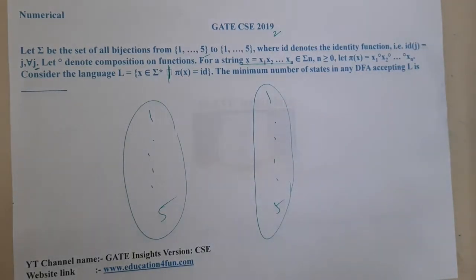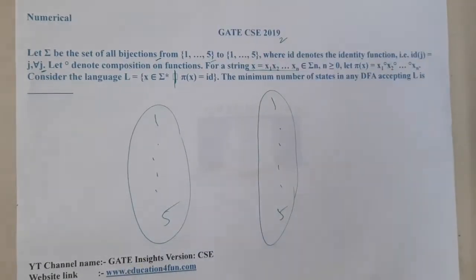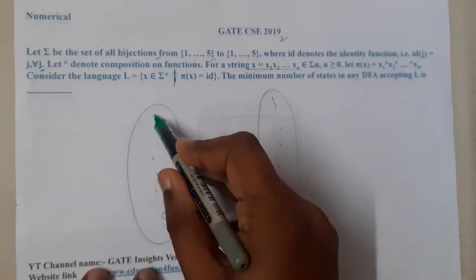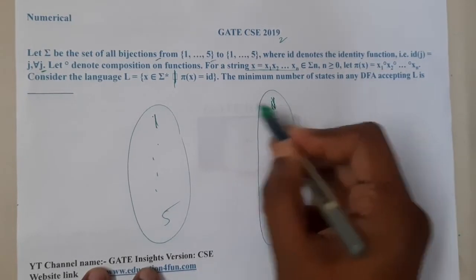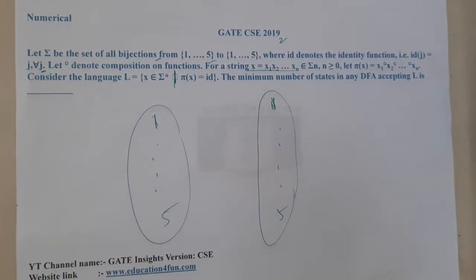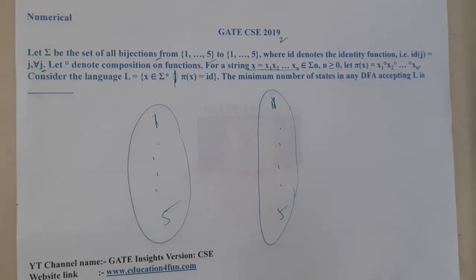This is a combination of both TOC and discrete mathematics because these are functions we have learned in discrete mathematics. A bijunction function is nothing but every one of these items will be mapped only with one, from both sides. It is nothing but an intersection between one-to-one and onto.